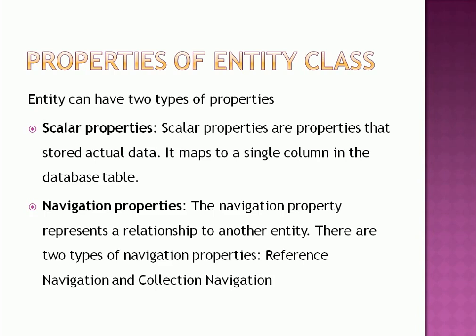An entity class is a plain .NET class that generally has a constructor and properties only — it does not include other methods. There are two types of properties: scalar properties and navigation properties. A scalar property stores data, and one property maps to a single column in your database table. A navigation property represents the relationship to another entity and is used to define the relationship between entities, similar to how we define relationships in a database. There are two types of navigation properties: reference navigation and collection navigation, depending on the association between entities — one-to-many, many-to-many, one-to-one, etc.